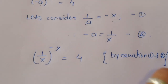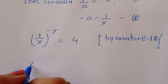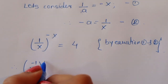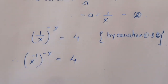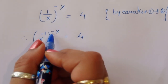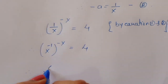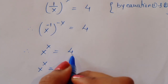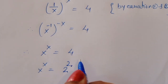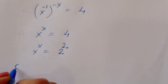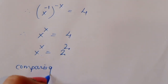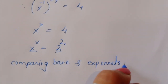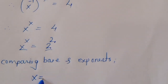From equations 1 and 2, we can write x to the power minus 1, raised to the power minus x, equals 4. Therefore x to the power (minus 1 times minus x), which is x to the power x, equals 4. Since 4 equals 2 squared, and comparing base and exponent, we can conclude that x is equal to 2.